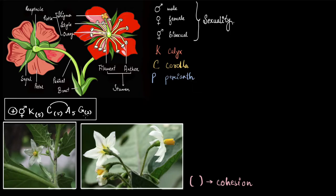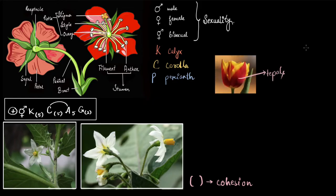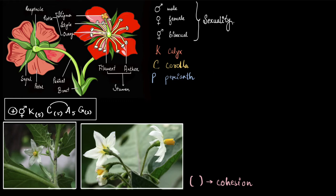Next we have P for perianth. We don't have that in our current floral formula, but it is important to know. Perianth simply means the fusion of sepals and petals, and those parts are called tepals. In a floral formula, perianth is represented as P with a certain number — for example, P3.